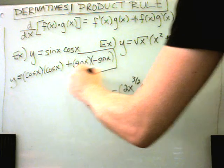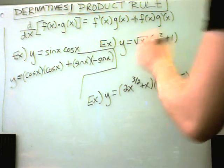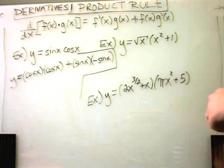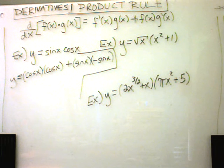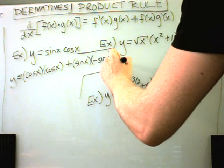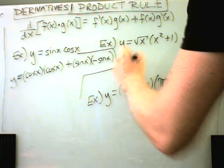Same thing on our next example here. You could multiply this out first. And a rule in general is to do as much algebraic simplification as you can before taking the derivative. It'll just make the resulting derivative much easier. But again, in this case, we're just trying to practice the product rule. So we'll do it the long way.